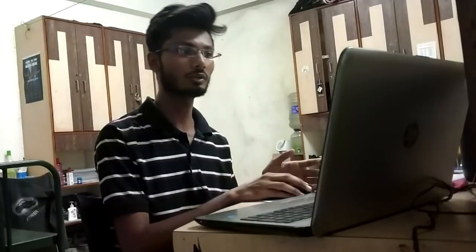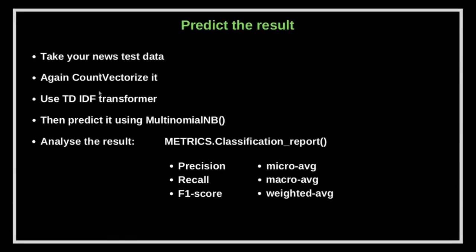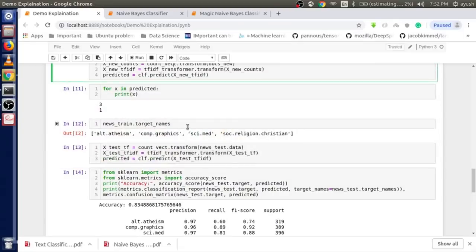Now our fourth step is finding the final result. We take the news test data, then first vectorize it (transform to count words), then find the weights using TF-IDF, and then predict using Multinomial NB.